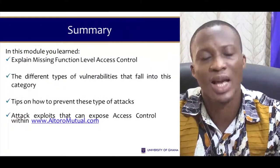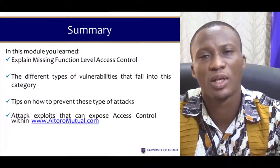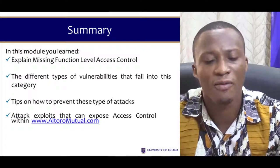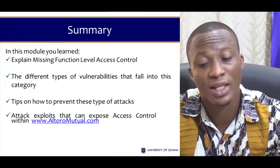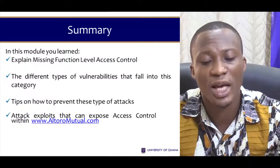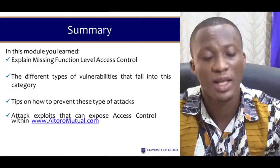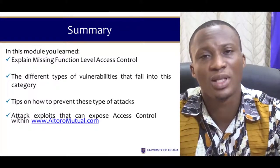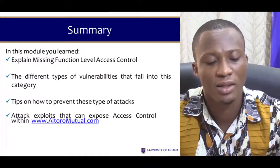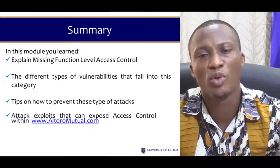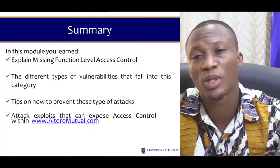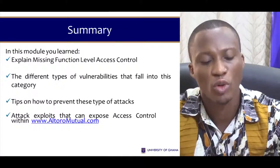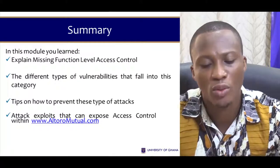In this session, I've spoken about what missing function level access control is, the different types of vulnerabilities that fall in this category, how to prevent this type of attacks, and how to exploit these access controls within autoromutual.com. This brings us to the end of session 9. I will see you in session 10. Thank you, take care.